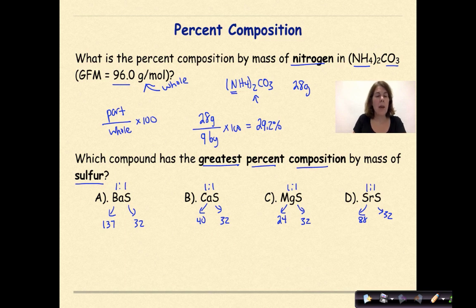Well, let's go back to BaS. So we're looking for the percent of sulfur. So this is going to be 32 over our total mass of 169 times 100. And that gives us 18.9%.